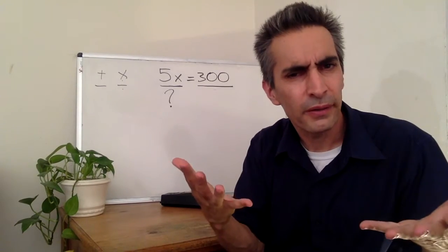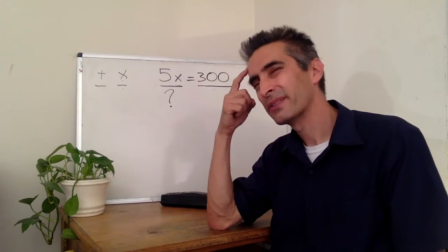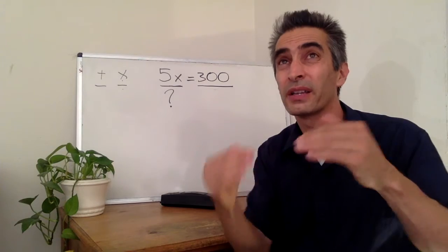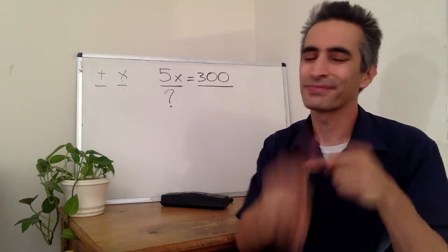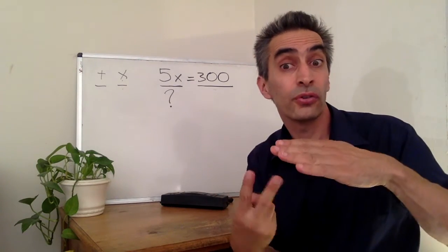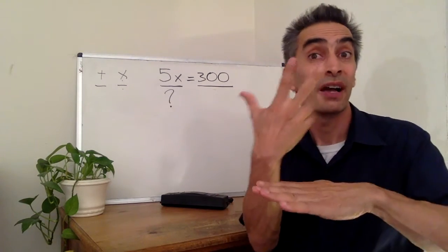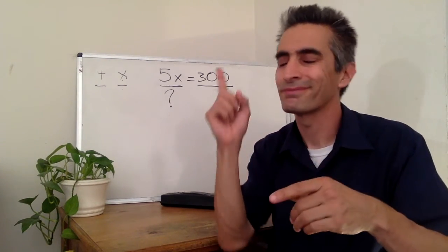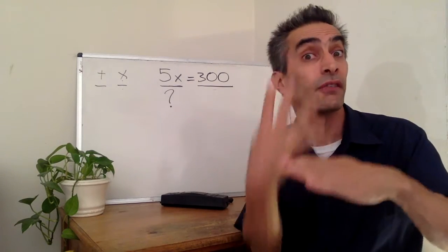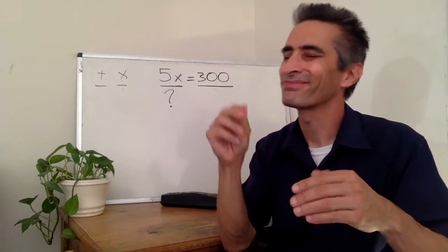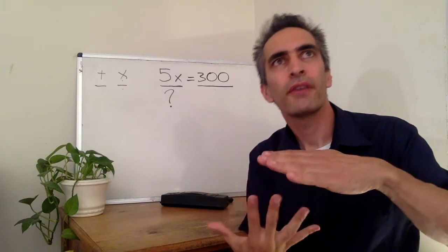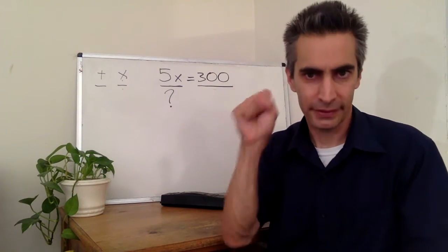What number are we going to divide by? Let's think about this. 5 over 1, does that equal 1? No, we can't use that. 5 over 2? No. 5 over 3? No. 5 over 4? No. 5 over 5 equals 1? Yes.